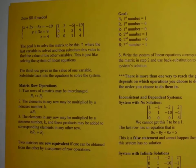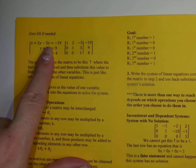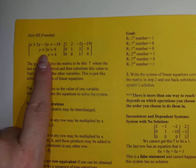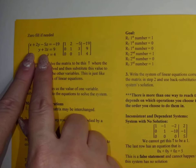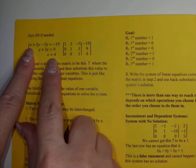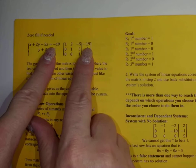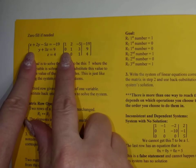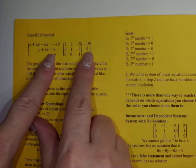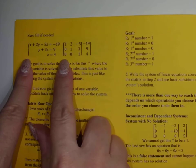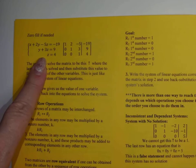We will zero-fill if needed. In a system that looks like this, we don't have every part. So we have 1, 2, negative 5, negative 19 — we don't have x, so we put a zero. There's 1y, 3z, and then 9. We don't have x or y, so we write 0, 0, 1, and 4.